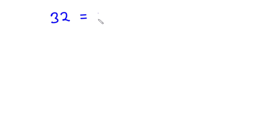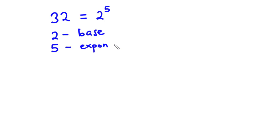Hello guys, welcome back to this channel. In the previous lesson we studied the laws of indices and solved a number of examples. We got to understand that some numbers can be expressed as powers of another number. For instance, the number 32 can be represented as 2 exponent 5, where 2 is called the base, 5 is the exponent, the power, or the index.